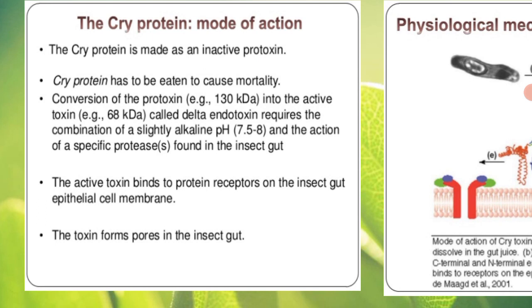The cryoprotein has to be eaten to cause mortality. For its activation and mode of action, the cryoprotein needs to be eaten by some host. Say an insect is sitting on a leaf and tries to eat that leaf. By that way, it will allow the cryoprotein into its body, because that plant is a Bt crop containing the cry gene. For activation of this toxin, it will need an alkaline pH and the activity of enzymes such as proteases. Both these conditions are available in the insect gut.